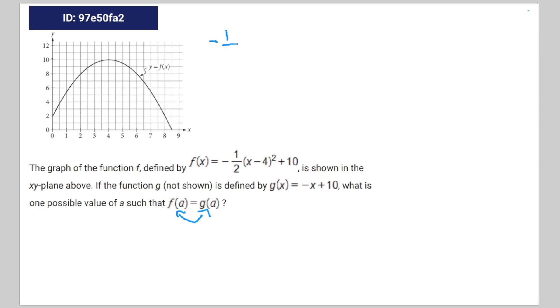That's going to be -1/2(x - 4)^2 + 10 = -x + 10.